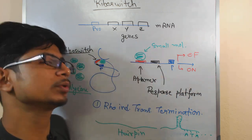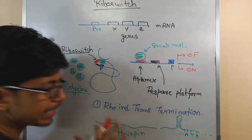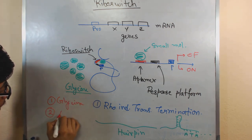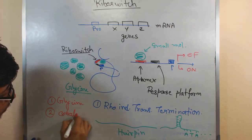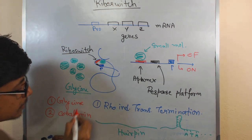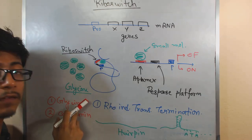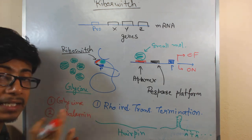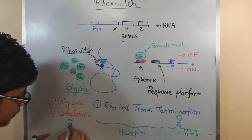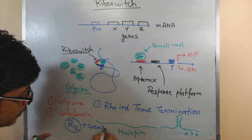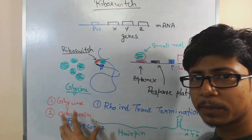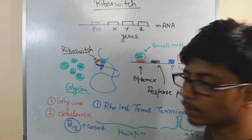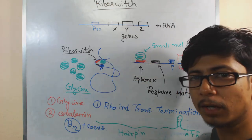Two examples of riboswitches: first, the glycine riboswitch, which controls the metabolism of glycine — the whole metabolism of glycine is dependent on the glycine riboswitch. Second, the cobalamin riboswitch — cobalamin is vitamin B12 attached to its coenzyme (cyanocobalamin or similar) — and the cobalamin riboswitch controls the synthesis of vitamin B12. Glycine and cobalamin riboswitches are very common examples.